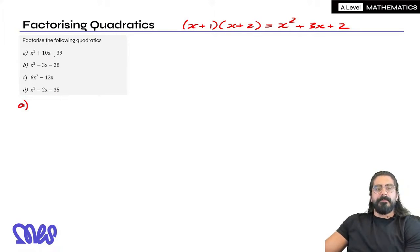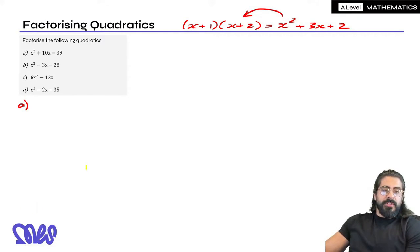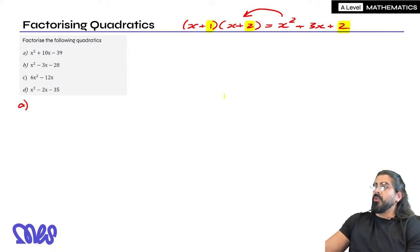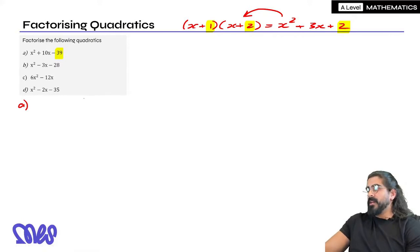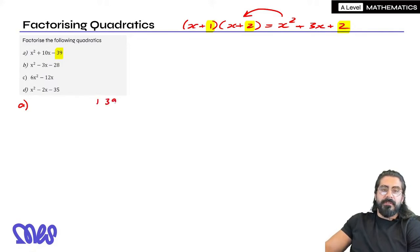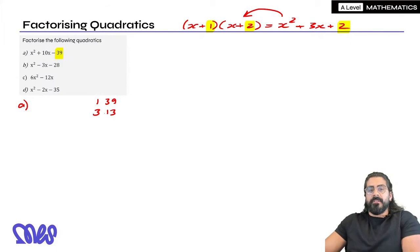So x squared plus 10x minus 39 — I want to rewrite it as the multiplication of two brackets. The first thing we do is look at the last numbers, because the last numbers must always multiply to give the last number. Since we have 39, we need to think about what options we have. What things multiply to give 39? We have 1 and 39, and 3 and 13. That's it.